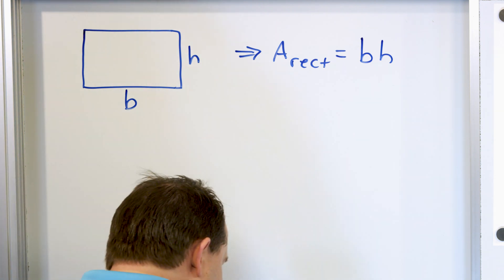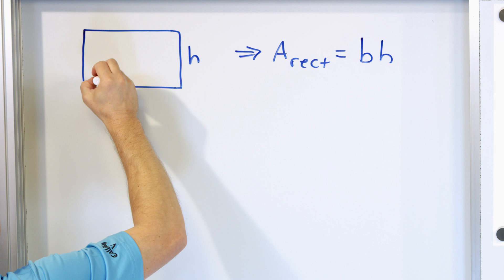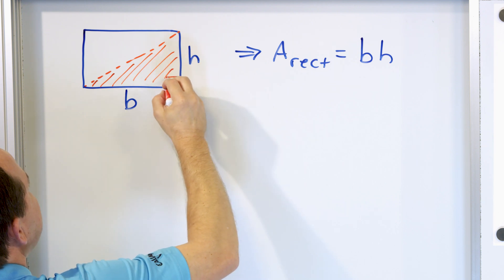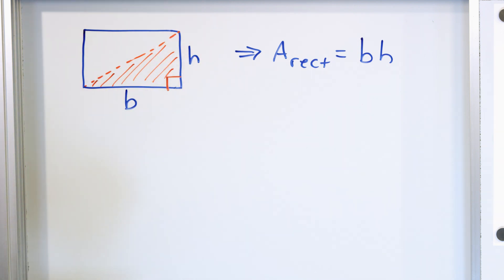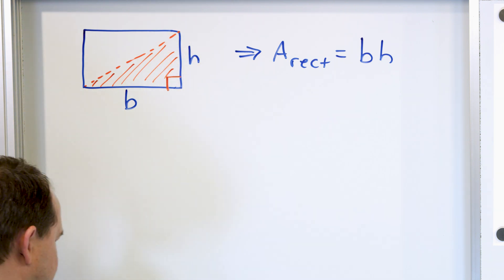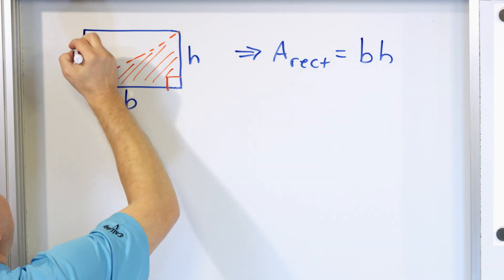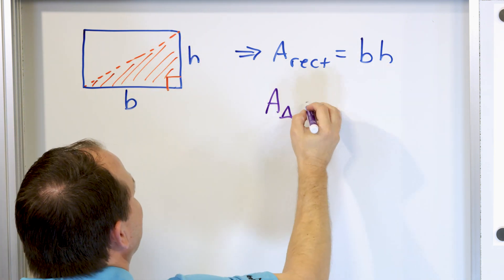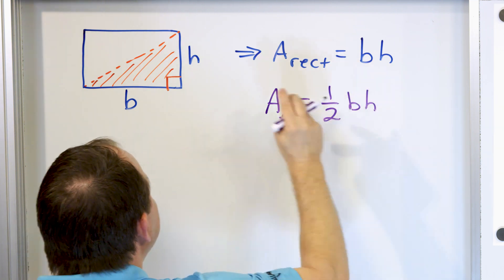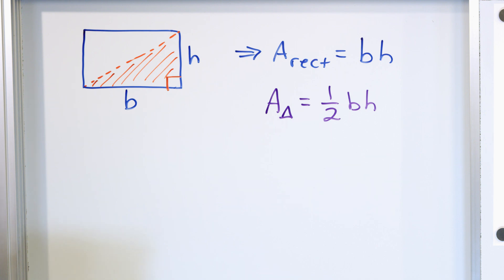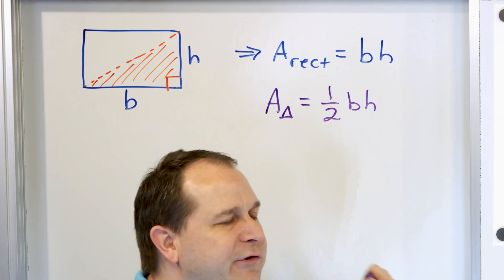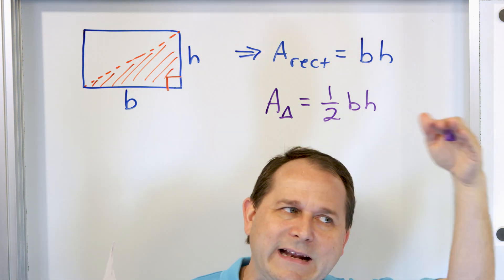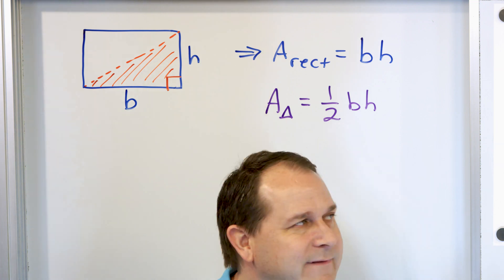So then if instead of that rectangle we cut it in half — literally slice it corner to corner — we find the area of just one of these halves, which forms a right triangle. From this diagram you can see that if the area of the entire rectangle is base times height, then the area of the right triangle inside is one-half times base times height. You take the whole area and cut it in half, divide by two. That is where the area of the right triangle comes from.